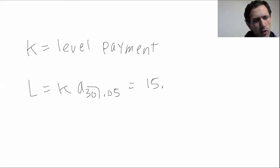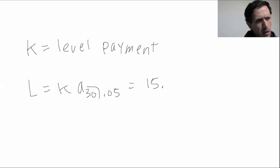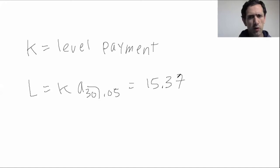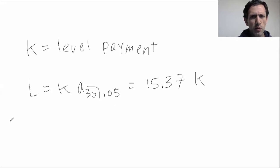We don't need to be too careful here because we are going to solve for T ultimately and round up. We're trying to find the first year at the end of which the outstanding balance falls below 15% of the original loan amount. So 15% of the original loan amount is going to be 15.37K times 0.15, which gives you 2.3055K.